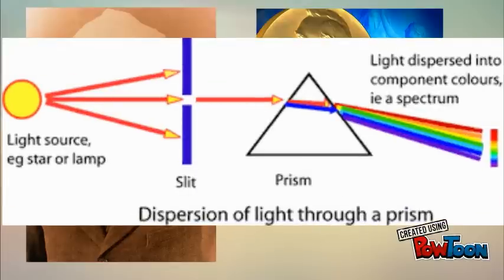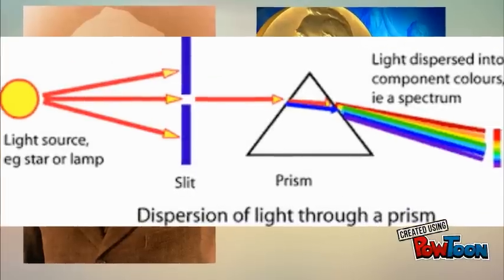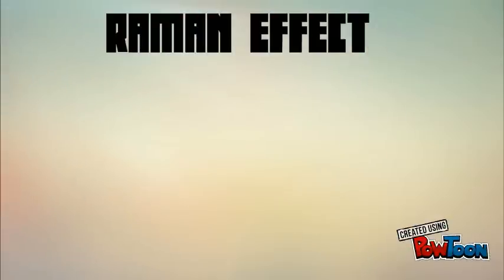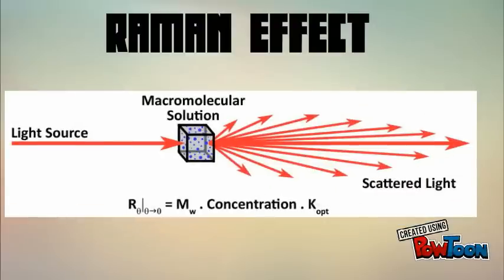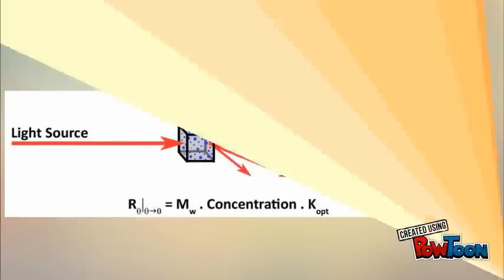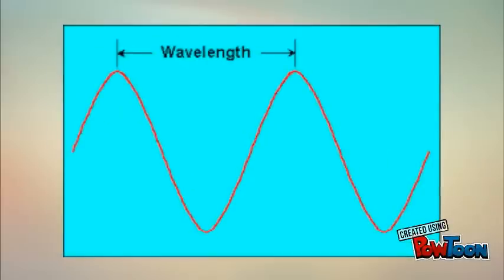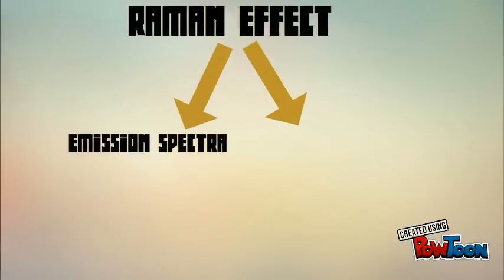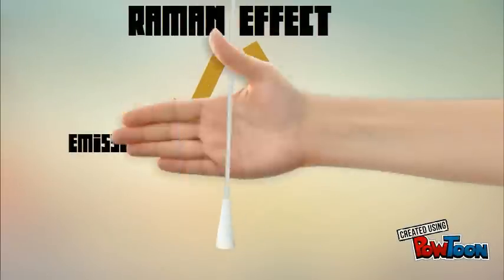After experimental evaluation, the Raman effect is a scattering of light based on wavelength. A wavelength is the distance between two similar points on a wave.